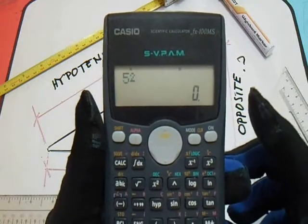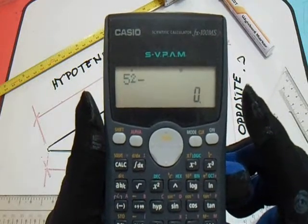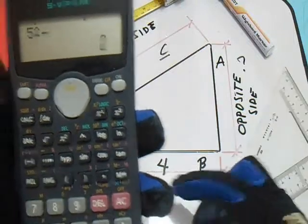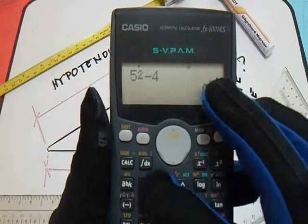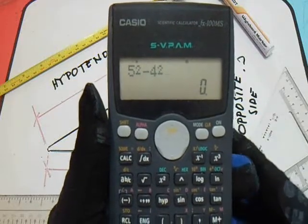5 squared minus B squared, 4 squared, equals...